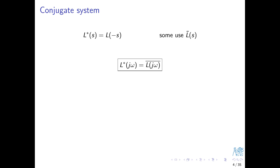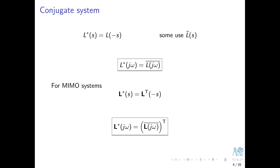This is a very useful result in control theory, but also in signal processing and filter design. The extension of conjugation to MIMO systems — matrices of transfer functions — is that the original matrix is also transposed. The relationship between L-star and the original L on the imaginary axis involves both complex conjugation and transposition. This is actually the default interpretation of the prime sign in MATLAB: complex conjugation and transposition.